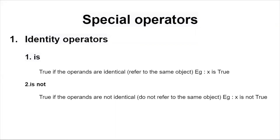Finally we have special operators. There are two types of special operators in Python: identity operators and membership operators. In identity operators there are two: is and is not. is returns True if the operands are identical, referring to the same object — that is, x is True if the value of x is True, and that code will return True. is not returns True if the operands are not identical, i.e., x is not True.